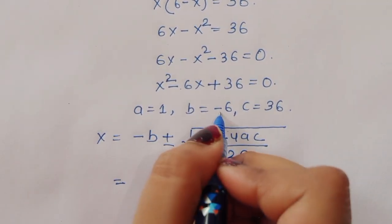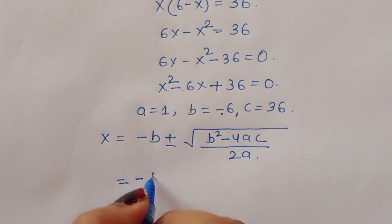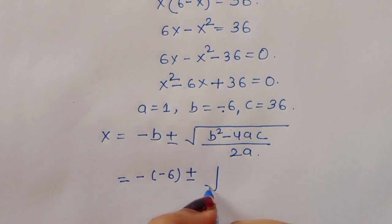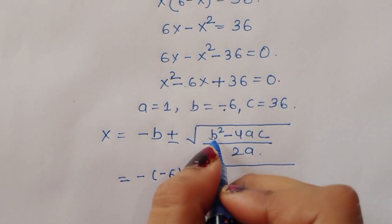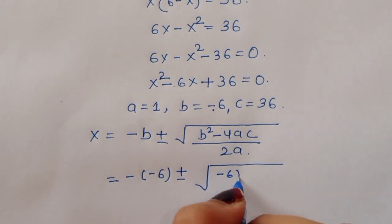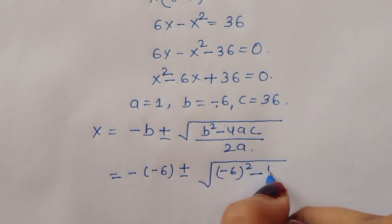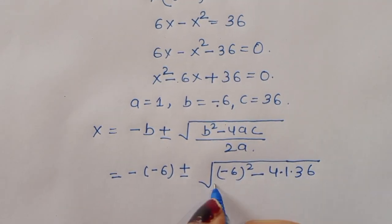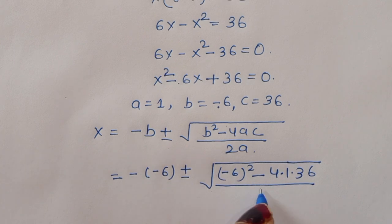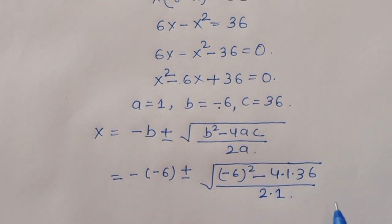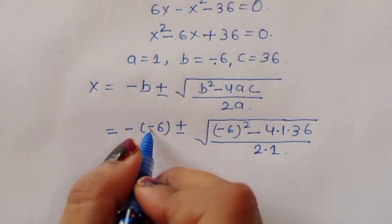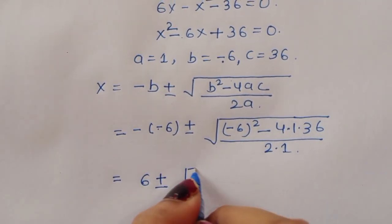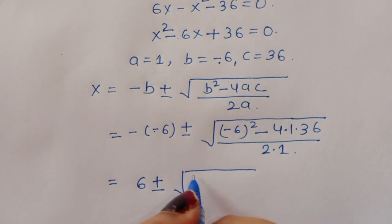Applying the quadratic formula: x is equal to minus b plus or minus the square root of (b squared minus 4ac) divided by 2a. Substituting: minus b is plus 6, b squared is 36, and 4 times a times c is 4 times 1 times 36 equals 144, divided by 2 times 1.